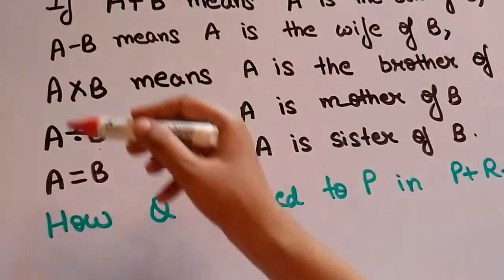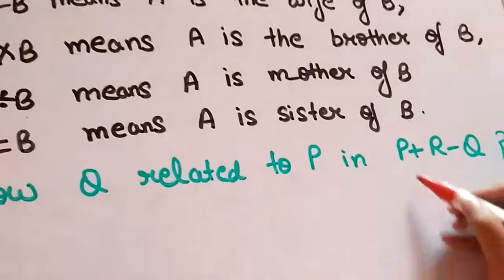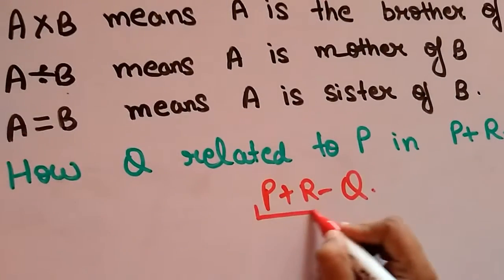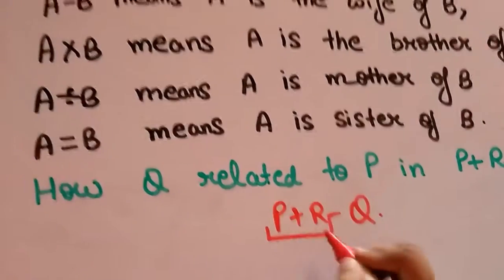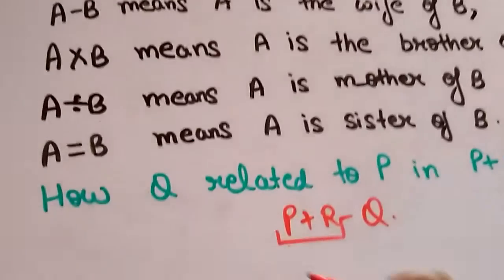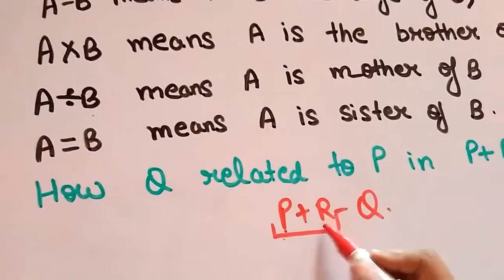So let's see P+R-Q. Let's first consider P+R. P+R means what? A+B means A is the son of B, that is P is the son of R.